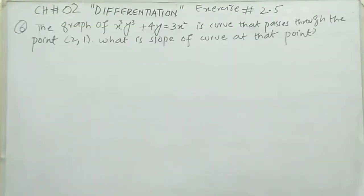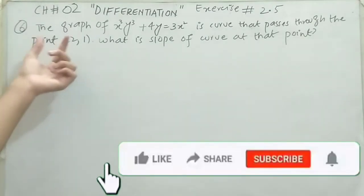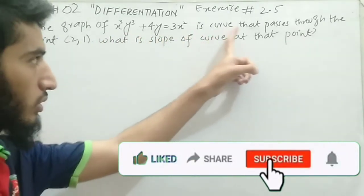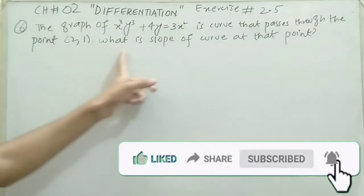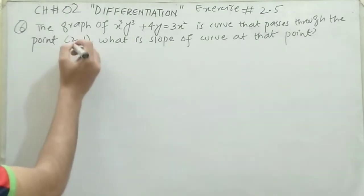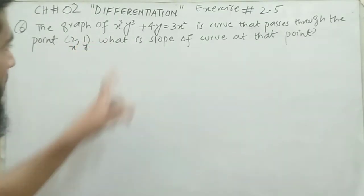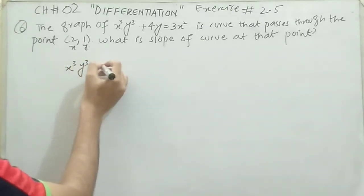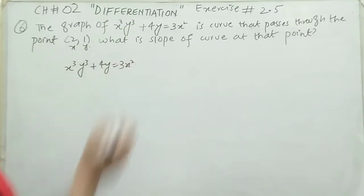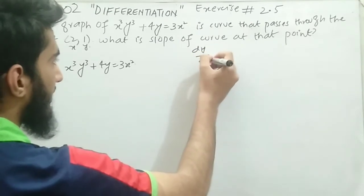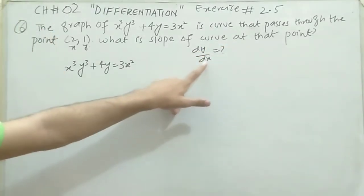Moving to question number six, the last question of today's lecture and of Exercise 2.5: the graph of x³y³ plus 4y equals 3x² is a curve that passes through the point (2, 1). What is the slope of this curve at that point? Here x equals 2 and y equals 1. We take the given curve: x³y³ plus 4y equals 3x². Since we need slope, we find dy/dx by differentiating both sides with respect to x.